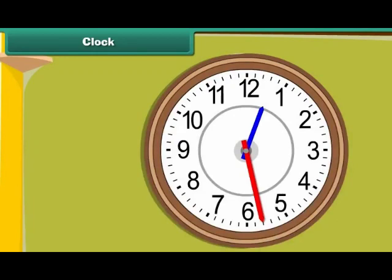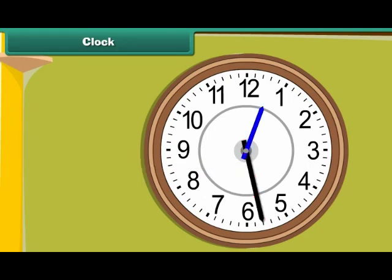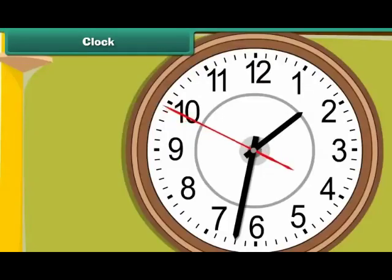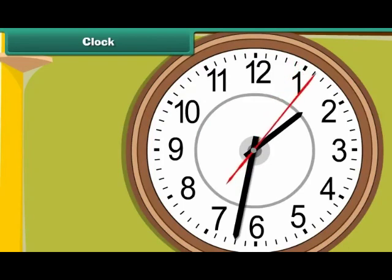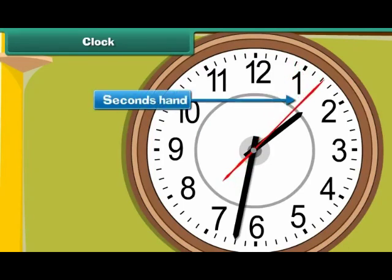The clock has two hands. The longer hand is called the minute hand — it indicates time in minutes. The shorter hand is called the hour hand, and it indicates time in hours. Some clocks have a third hand. It is the thinnest and the longest hand in the clock. It is called the seconds hand, and it indicates time in seconds.